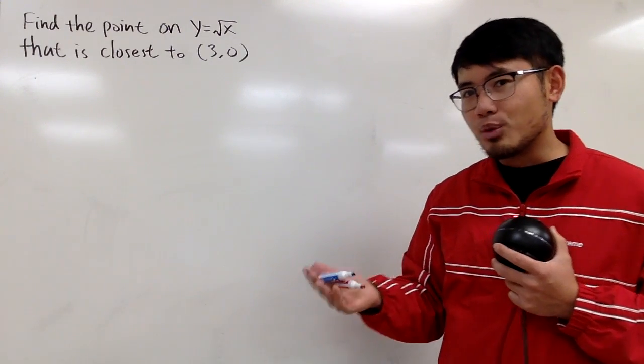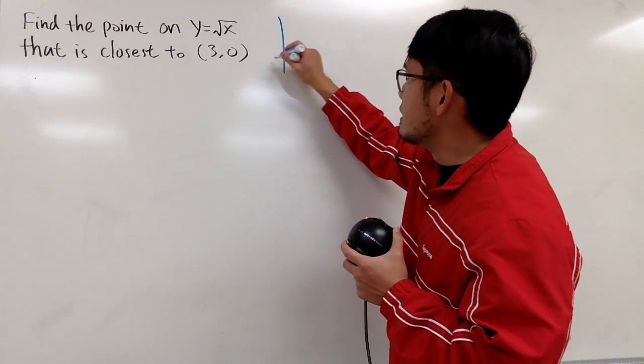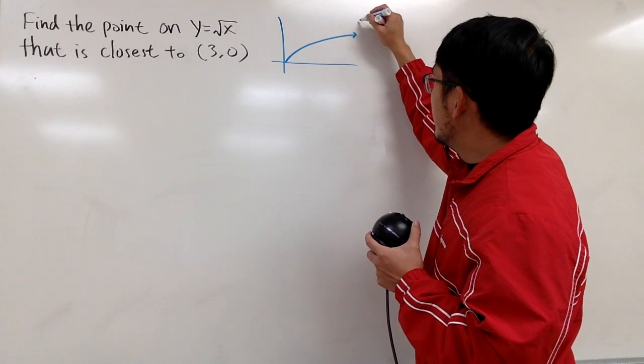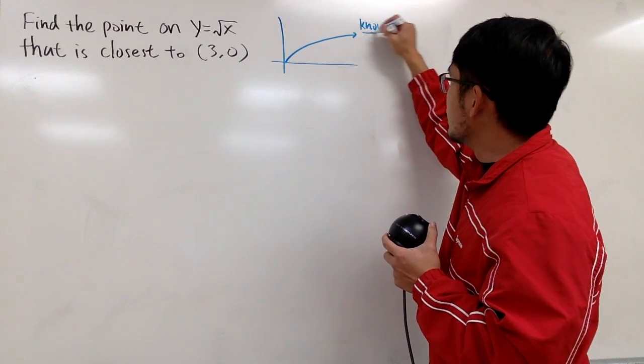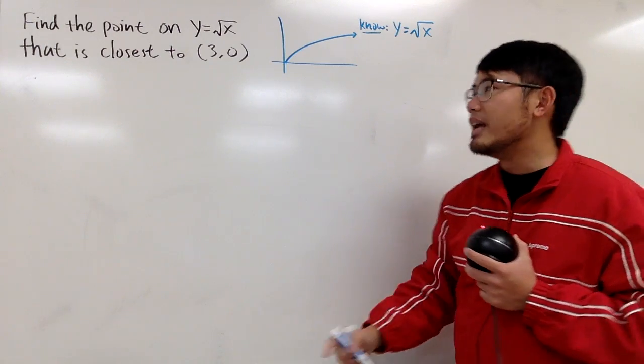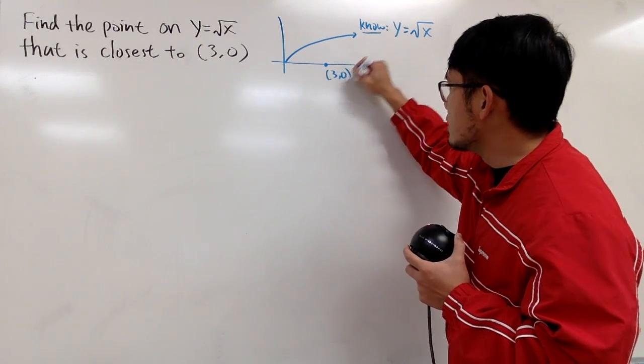And it will be helpful to see a picture. So let's draw the square root of x right here. And this right here is what we know, y equals square root of x. And then we're also having this point 3, 0. Let me just put it down right here.